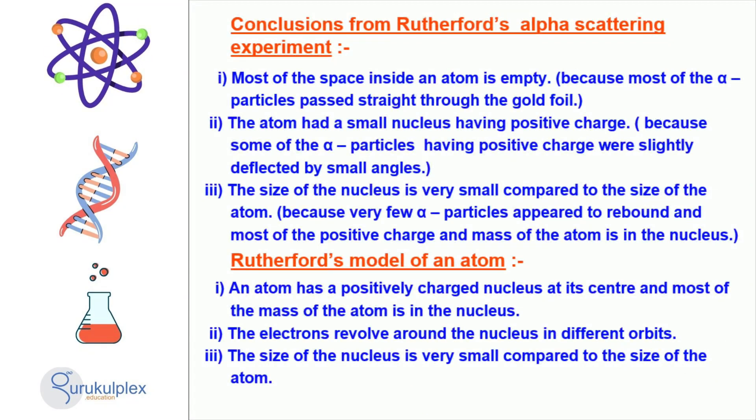Conclusions from Ernest Rutherford's alpha scattering experiment revealed that atoms contain much empty space, a small, positively charged nucleus, and little evidence of electrons in motion. This led to Rutherford's model of atoms being composed of a positive nucleus surrounded by electrons in orbits around it, the nucleus being minuscule compared to the size of the atom. These findings gave us a better insight into the structure of an atom and have drastically impacted our understanding of matter.